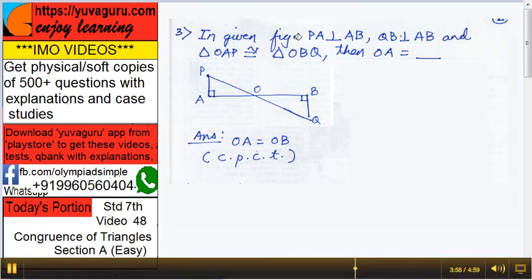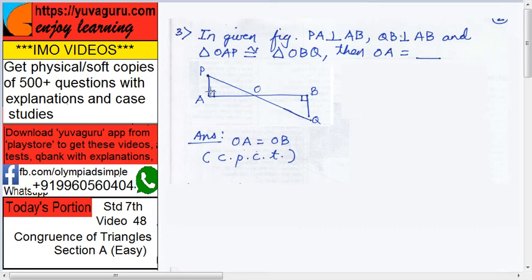In the given figure, PA is perpendicular to AB and QB is perpendicular to AB — meaning both lines are perpendicular to AB.